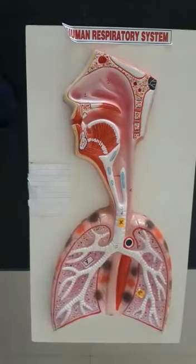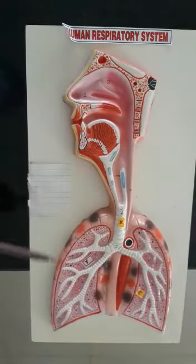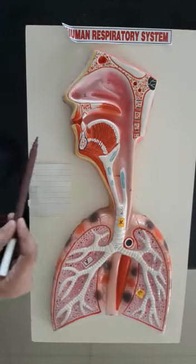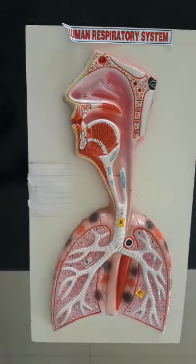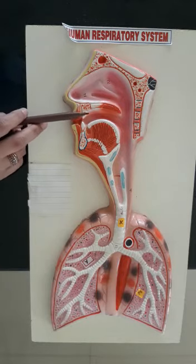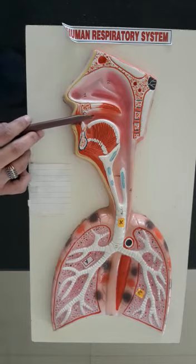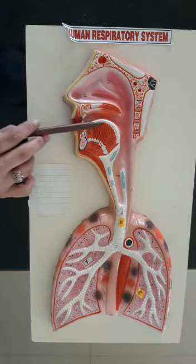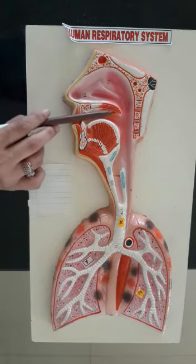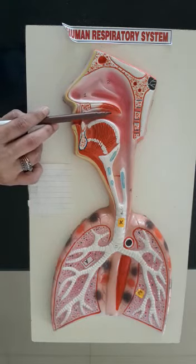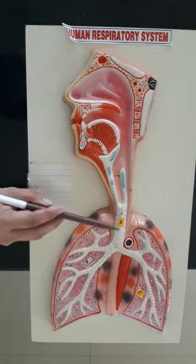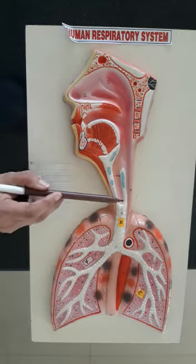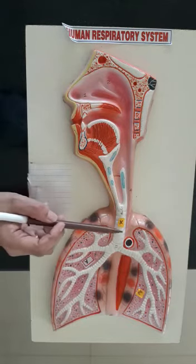Now we come to the human respiratory system. When we inhale — when we breathe in — we take in air rich in oxygen through the two openings called the nostrils. So through the nostrils, air enters. That air is rich in oxygen and will enter this part which is called the nasal passage. From here, air then enters into this part which is called the trachea. This trachea is made up of rings of cartilage.